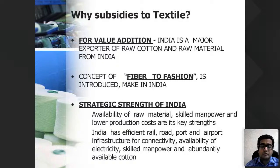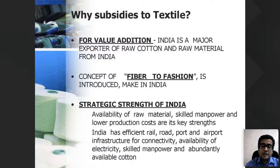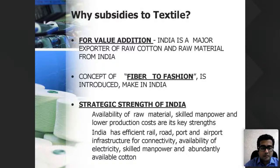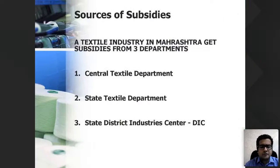With the current government focusing on road connectivity and infrastructure, almost every corner of the country is being connected by roads, making it easier to transport raw material from villages to urban industrial areas. India has a lot of strategic strength not being fully utilized, so the government is promoting this and giving subsidies to get more people interested in starting textile industries.